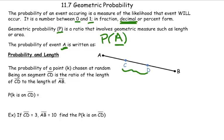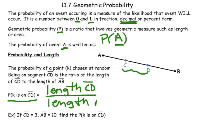So the probability that K is on CD, this is how we're gonna write that. The probability of point K being on segment CD is written like this. So we put length of segment CD over the length of the whole thing, segment AB.